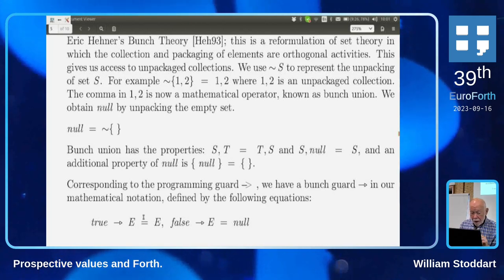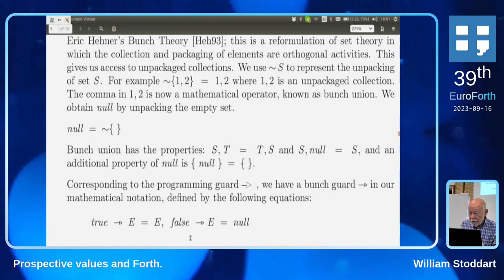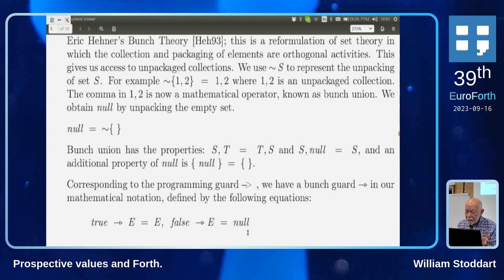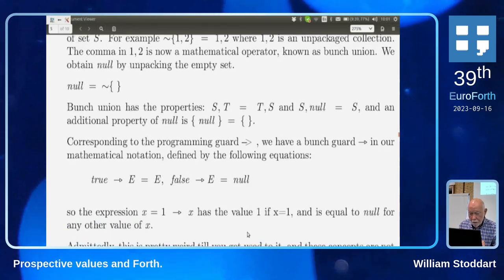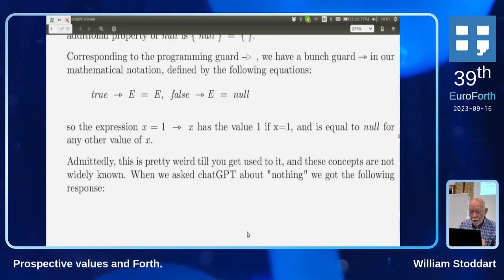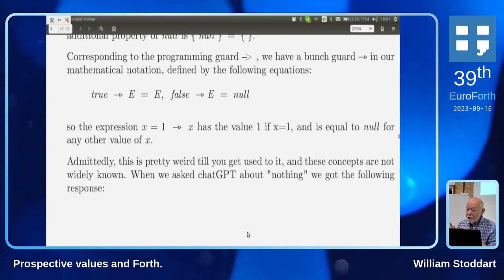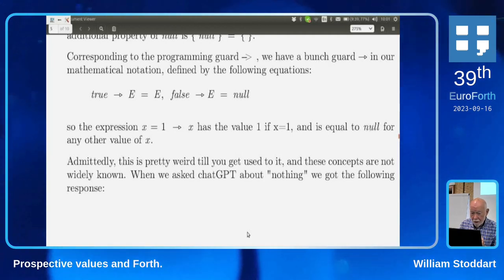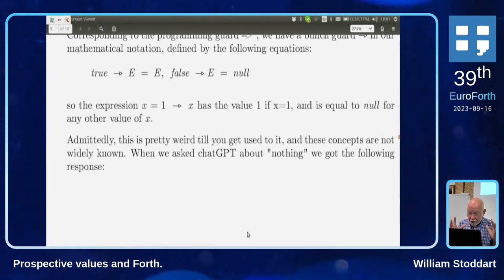We have a programming guard to start reversible computation, and in our mathematics we have a bunch guard with these rules: true guard z = e, and false guard z = null. So mathematical expressions can resemble programs in very strange ways. For instance, 'x = 1 guard x' has the value 1 if x equals 1, and nothing otherwise.